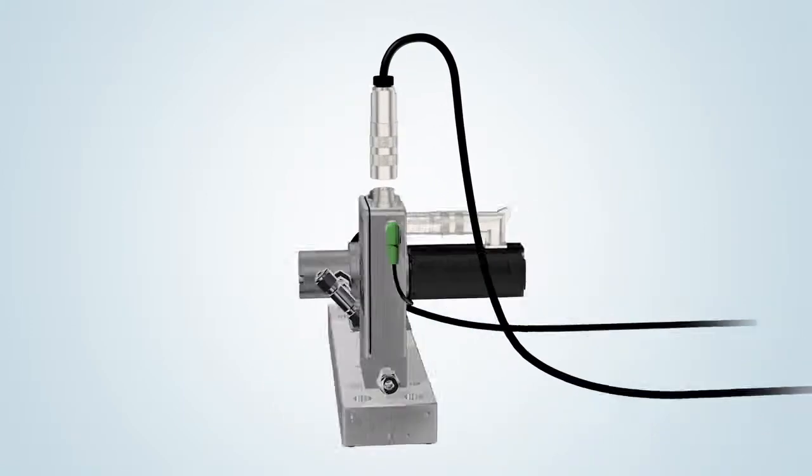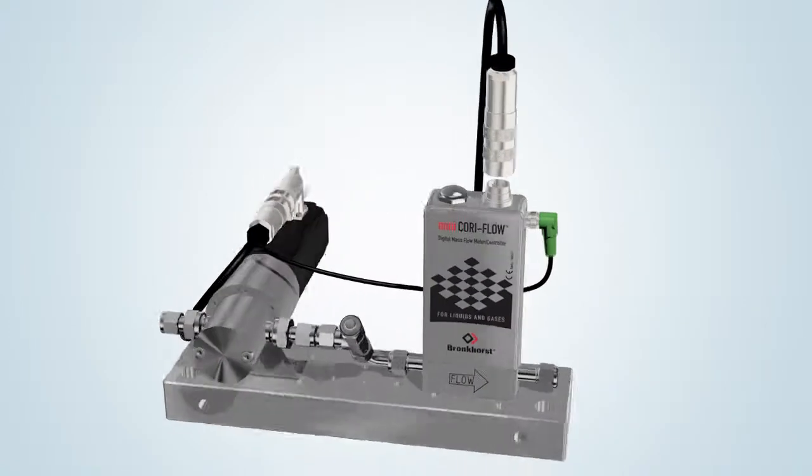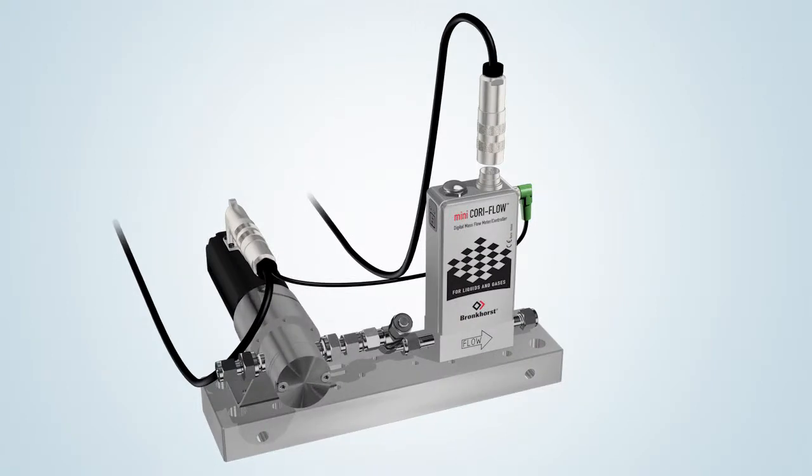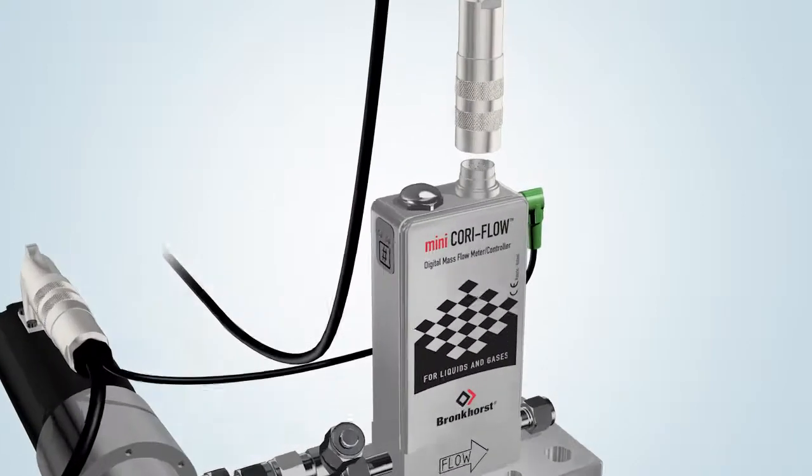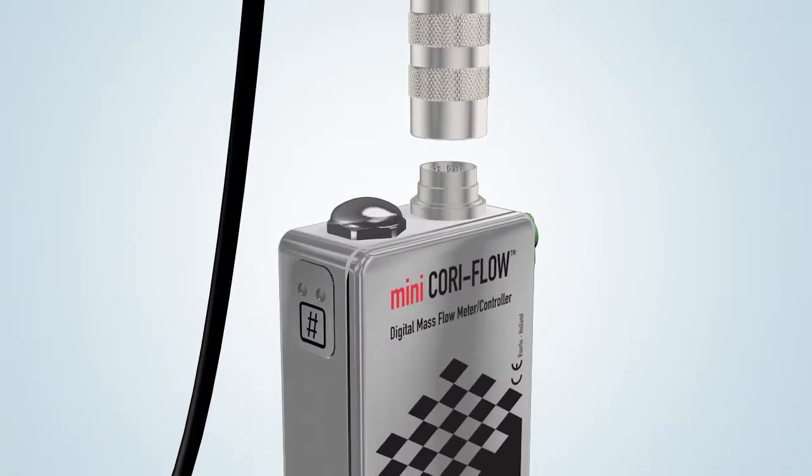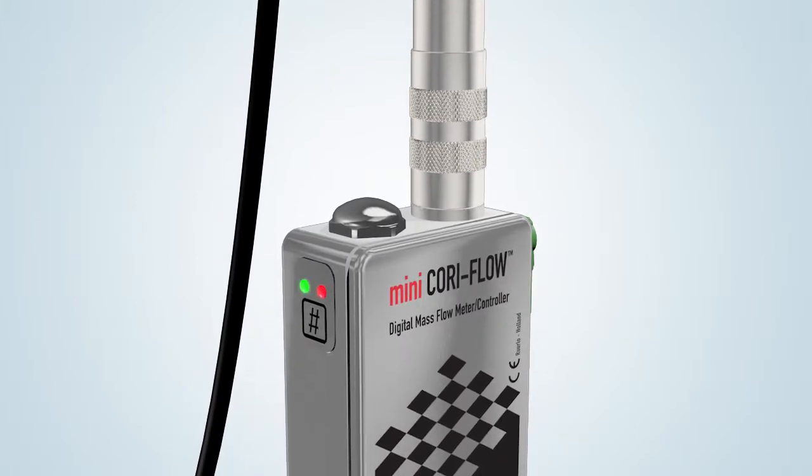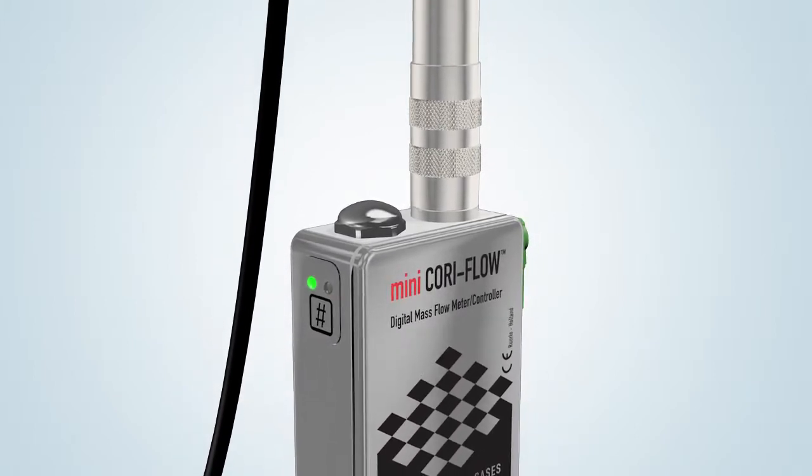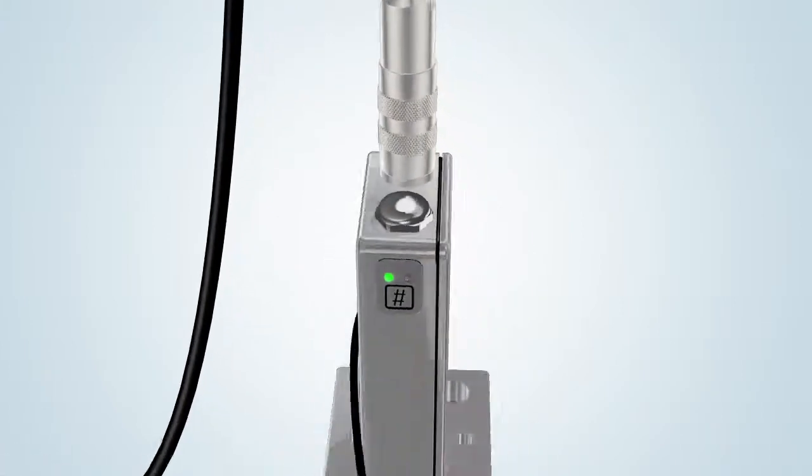A Bronkhorst Mini CoriFlow instrument requires a voltage of between 15 and 24 volts. When the supply voltage is connected, the LEDs show the current status. The instrument is ready for use when the green LED lights up.